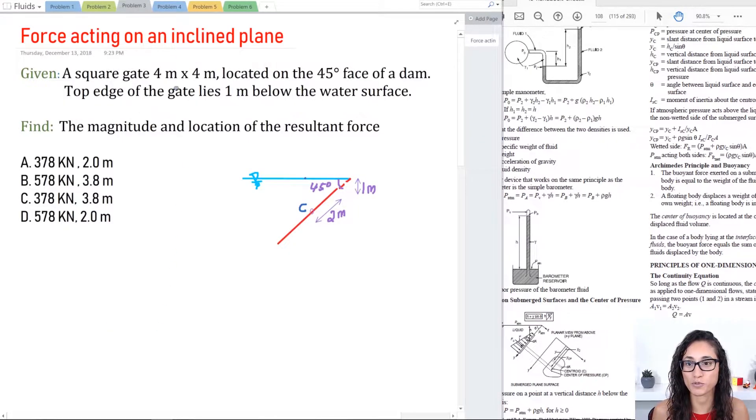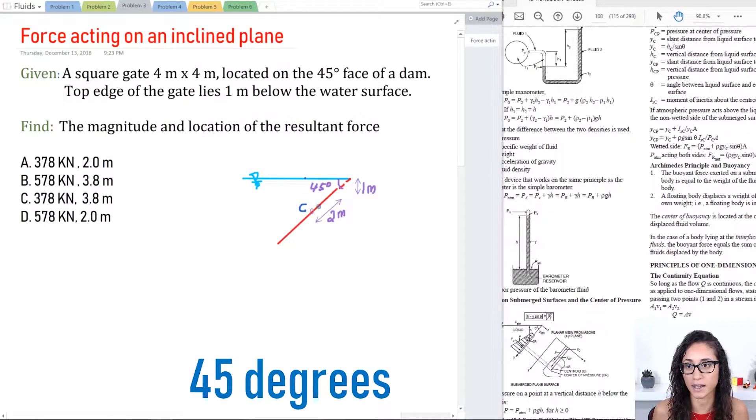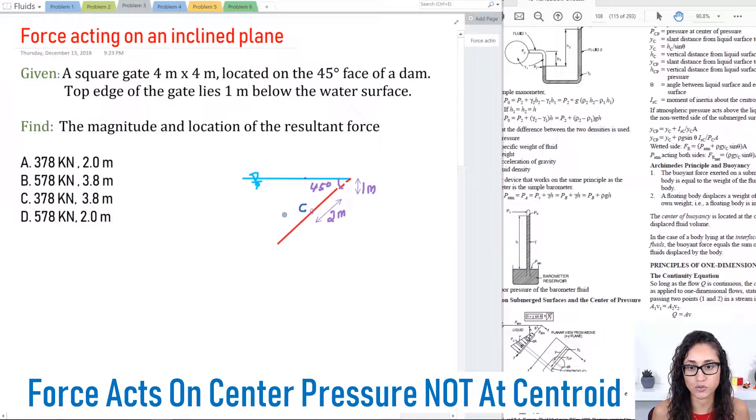Okay, so we have a 4x4 gate located at 45 degrees on the face of the dam. The top edge of the gate is 1 meter below the water surface, and we need to calculate the magnitude and the location of the resultant force.